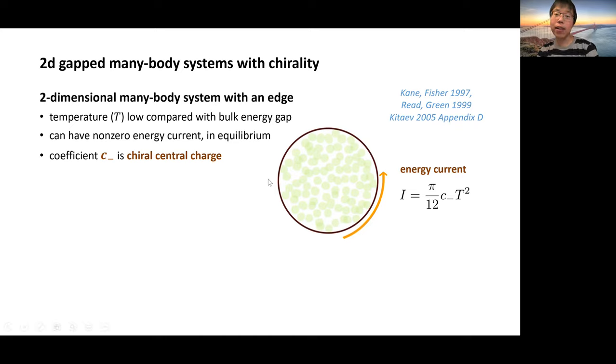There are exotic such systems that if we put the system on a closed manifold, it can be completely gapped. However, if we put that system on a disk with an edge, there is always a gapless mode flowing near the boundary. And if we consider a finite temperature low compared to the energy gap, then in an equilibrium state, there can be a non-zero energy current flowing along the boundary. And it breaks the chirality in the sense that the current may just go counterclockwise instead of the other way around.